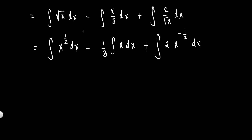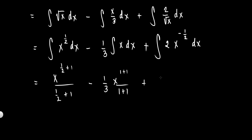We rewrite as: the integral of x raised to 1 half dx, minus 1 third times the integral of x dx, plus the integral of 2 times x raised to negative 1 half dx. Applying the power formula: x raised to 1 half plus 1, over 1 half plus 1, plus c, minus 1 third times x raised to 1 plus 1, over 1 plus 1, plus c, plus 2 times x raised to negative 1 half plus 1, over negative 1 half plus 1, plus c. All three c terms combine into a single constant c.